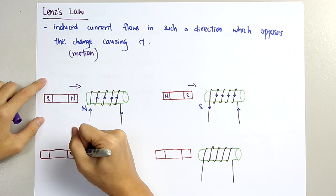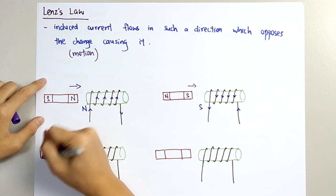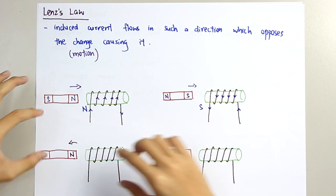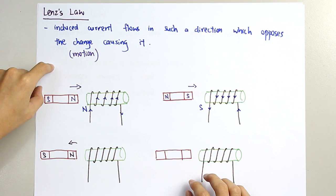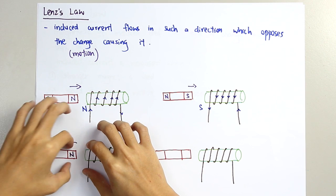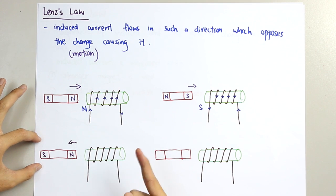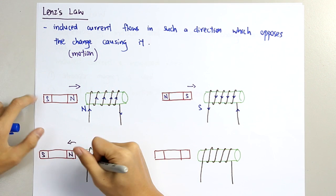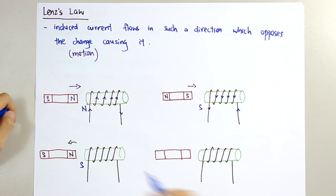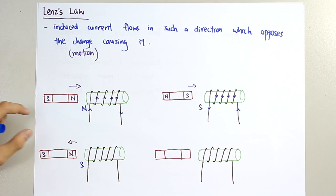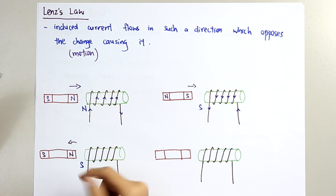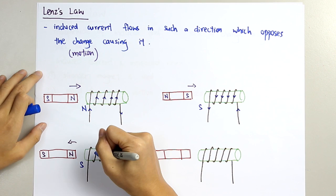Next, we consider a North Pole and South Pole magnet being moved away from the solenoid. To oppose this change, we need to pull the magnet back — so the near side must temporarily become a South Pole to attract the North Pole and oppose the motion away. Applying the right-hand grip rule, the induced current flows in this direction.